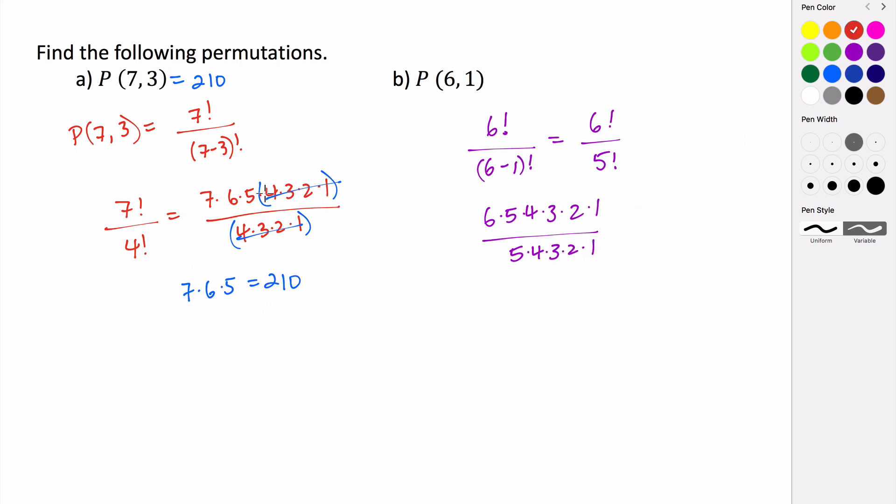Similarly, like we had here, we have 5 times 4 times 3 times 2 times 1 in both our numerator and denominator. So those end up canceling, and we just end up with 6. So there's 6 different ways to take 6 objects one at a time.